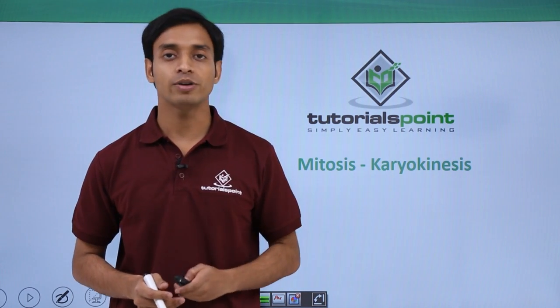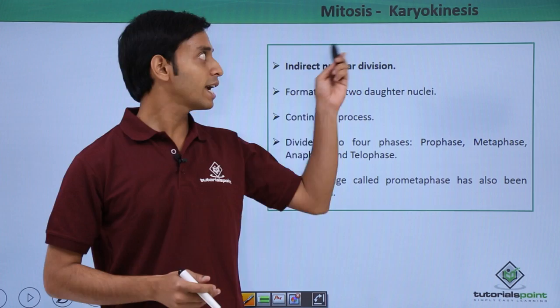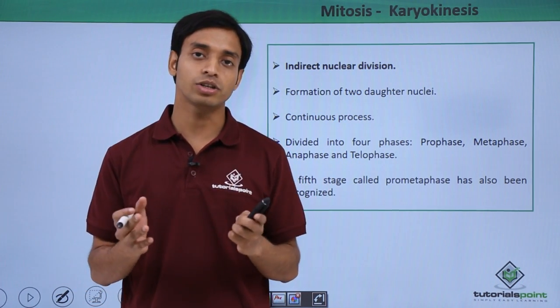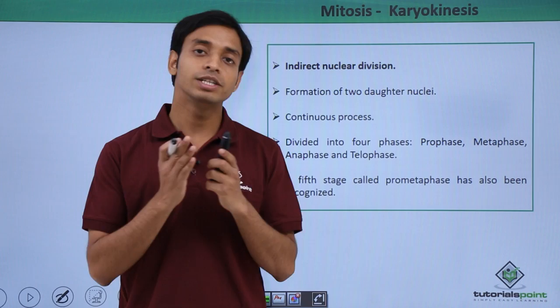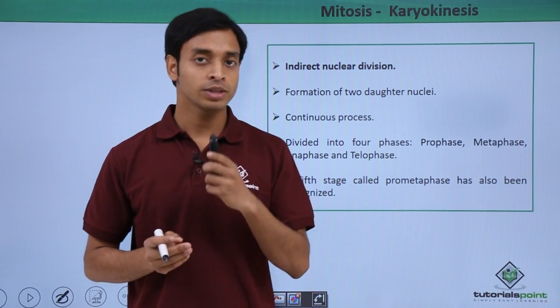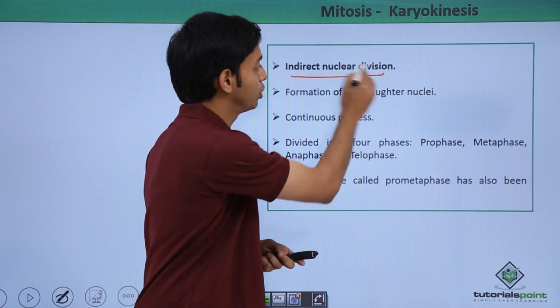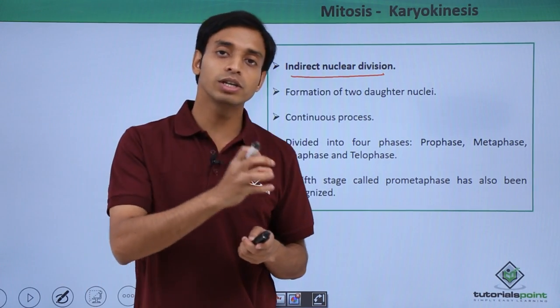What do we mean by karyokinesis? The word karyon means nucleus, whereas kinesis means division. So this is the division of the nucleus. This process of karyokinesis is also known as indirect nuclear division.